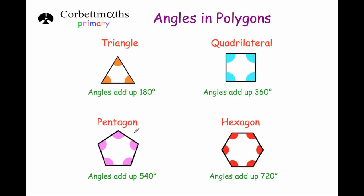Here we've got a pentagon. The five angles in a pentagon always add up to 540 degrees, so these angles added together would be 540 degrees.